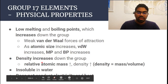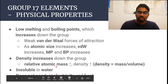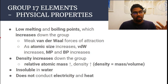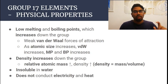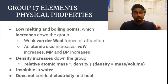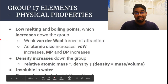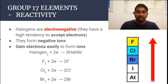Density also increases down the group — when relative atomic mass increases, density increases. Generally they are insoluble in water, though chlorine and bromine are actually a bit soluble, and iodine is very slightly soluble, almost insoluble. Since they are non-metals, they do not conduct electricity or heat.